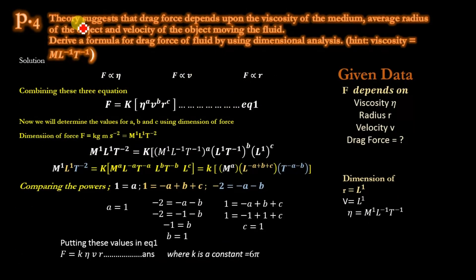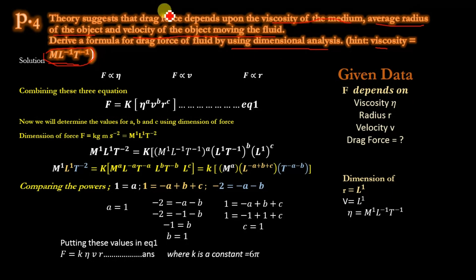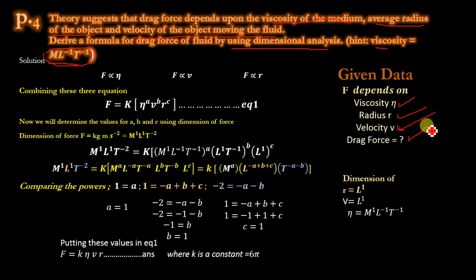Problem 4: Theory suggests that drag force depends upon the viscosity of the medium, average radius of the object, and velocity of the object moving within the fluid. Derive a formula for drag force using dimensional analysis. The given data: viscosity η, radius r, velocity v, and drag force Fd is unknown.